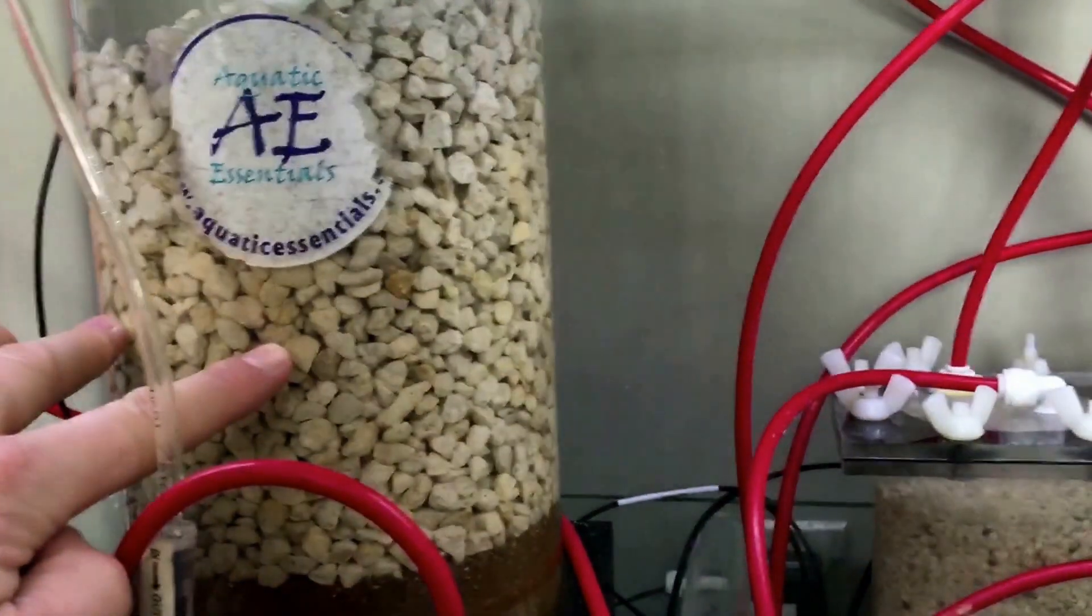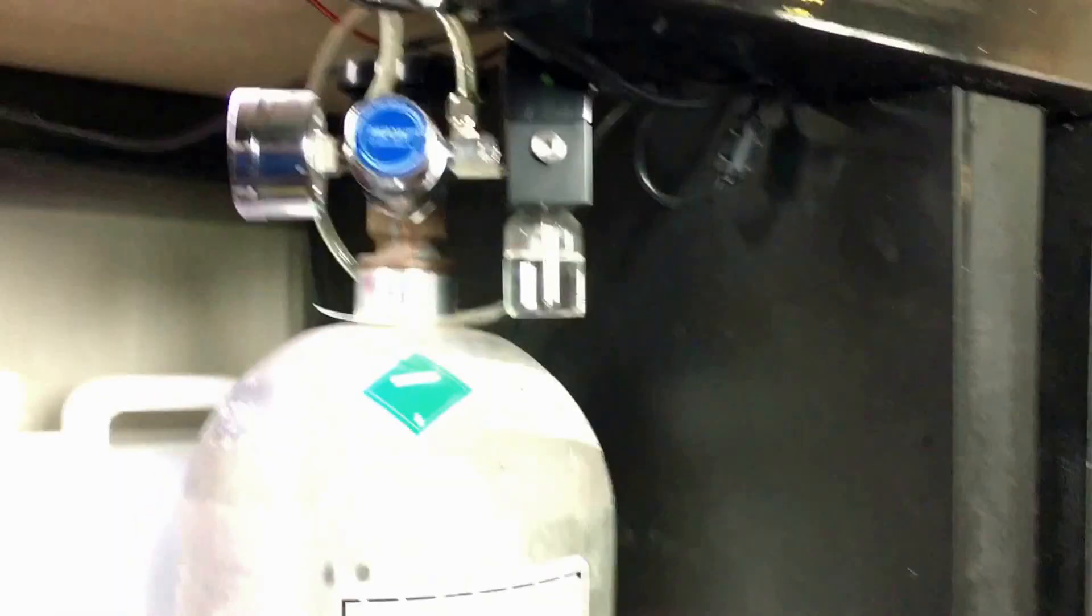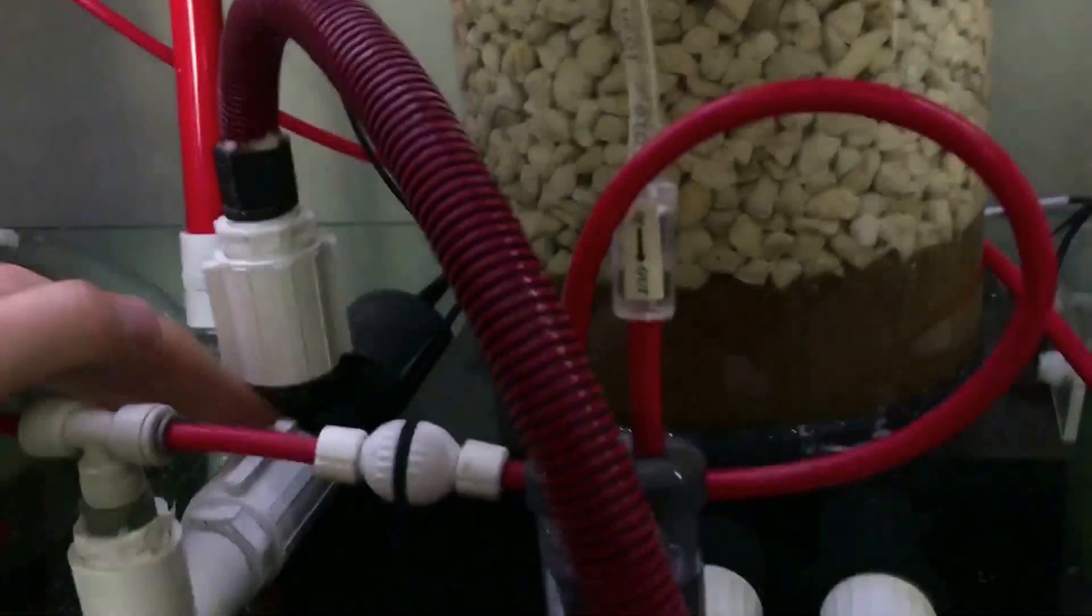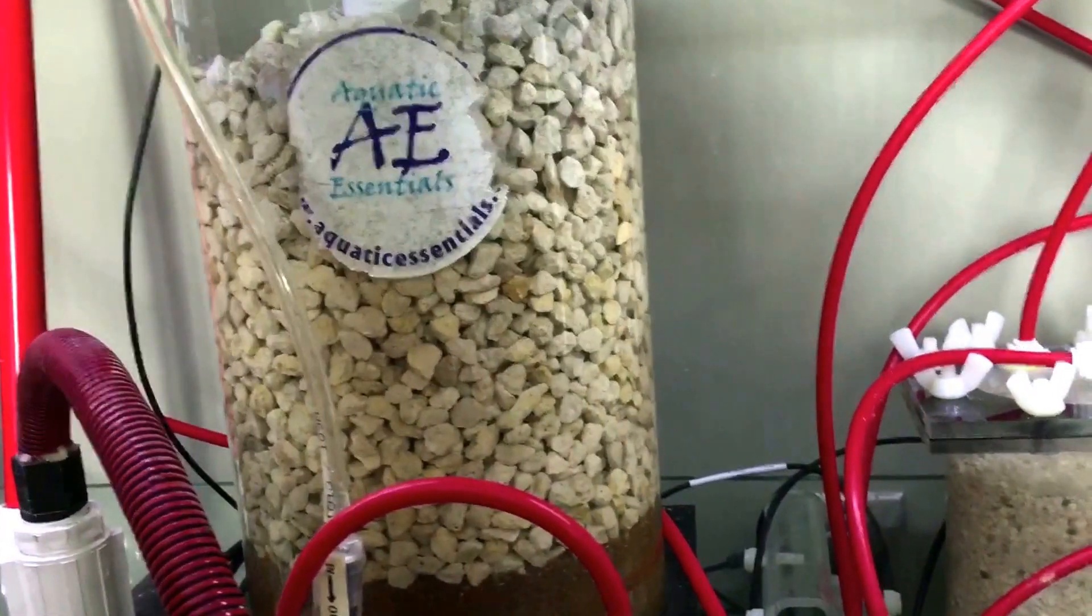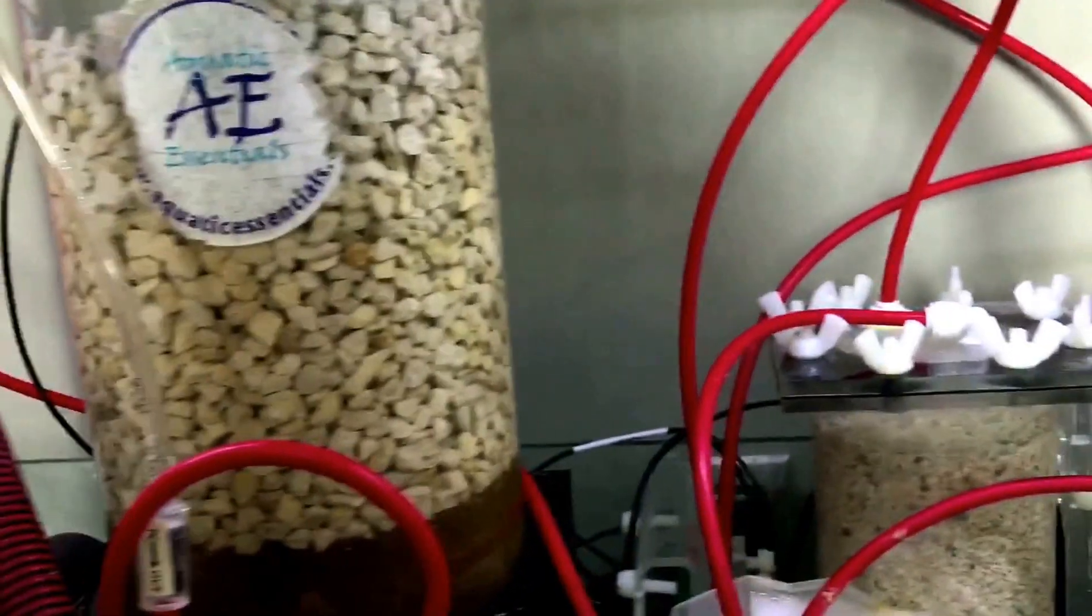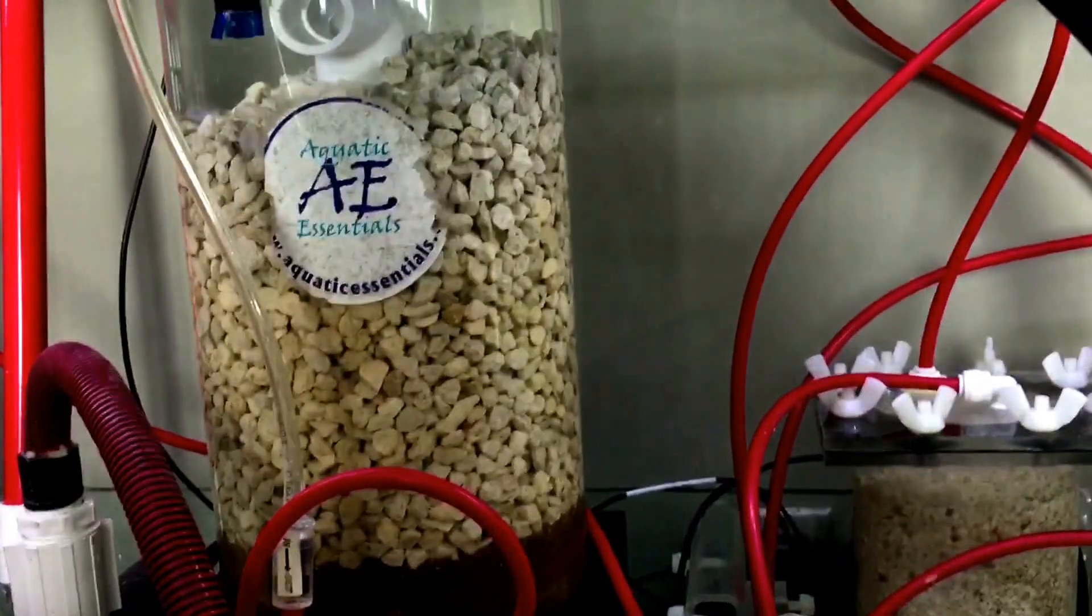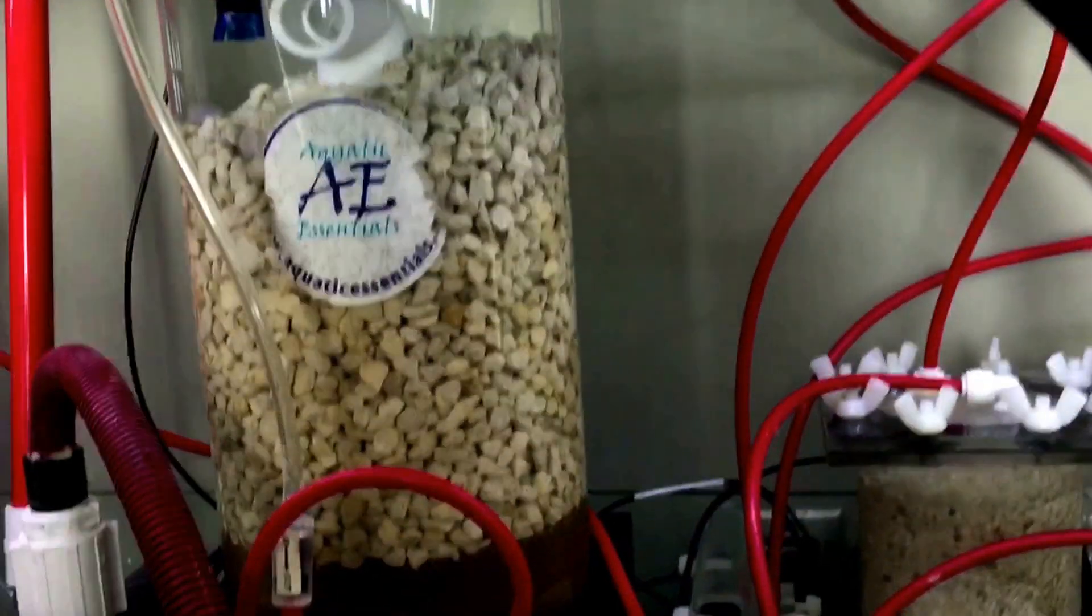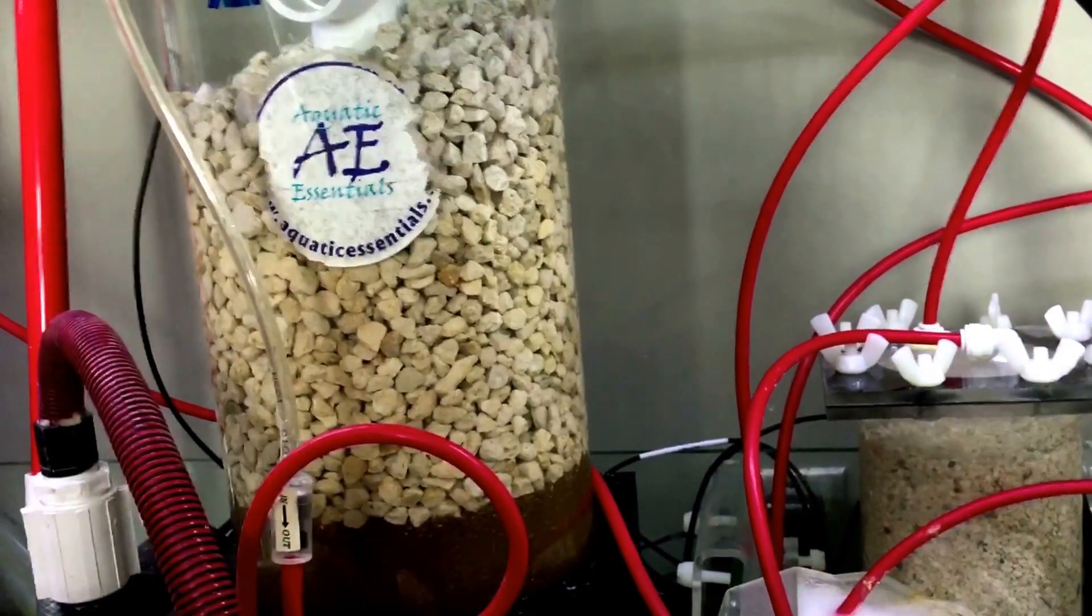The main benefit of a calcium reactor is you inject CO2—there's my CO2 tank—into this chamber. There's a pump right here that recirculates the water through the chamber, and this little line coming into it injects CO2. It slowly makes it acidic and starts melting it, and then you drip the water back out, which we call the effluent, into the tank.